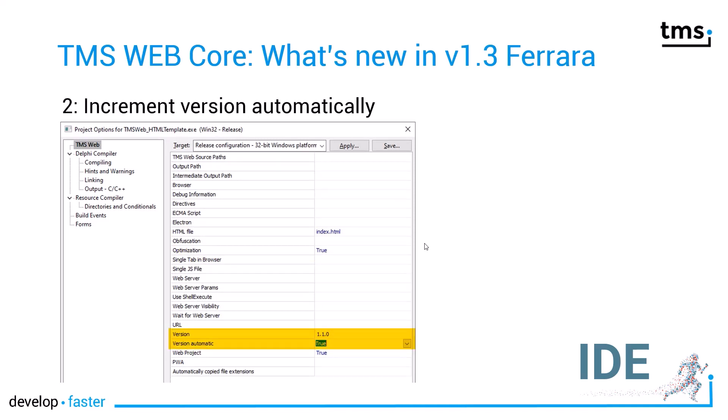Your TMS web applications so far lacked any versioning information like a desktop exe. Now with WebCore 1.3, you can add a version and you can also tell the IDE to automatically increment the version number for every release build.